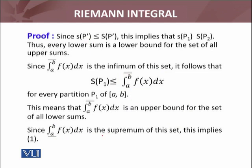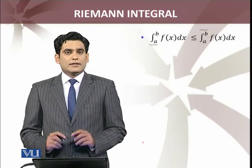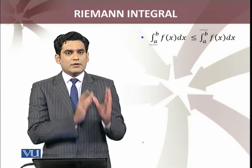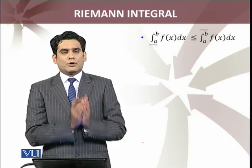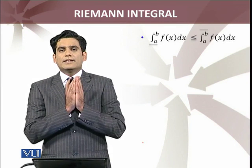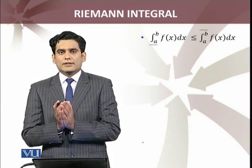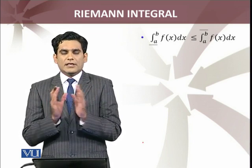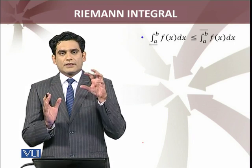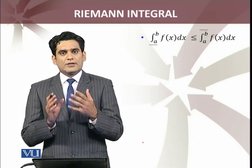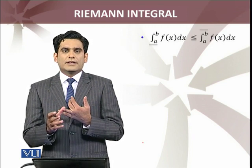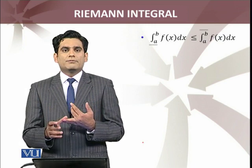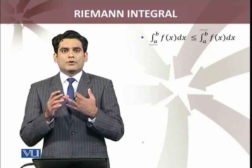So since the lower integral from a to b is the supremum of this set, this implies equation (1), which we had to prove. So we have proved that the Riemann lower integral of a bounded function f over the interval [a, b] is always less than or equal to the Riemann upper integral of f on the bounded interval [a, b]. We proved this inequality by using the definitions of supremum and infimum.